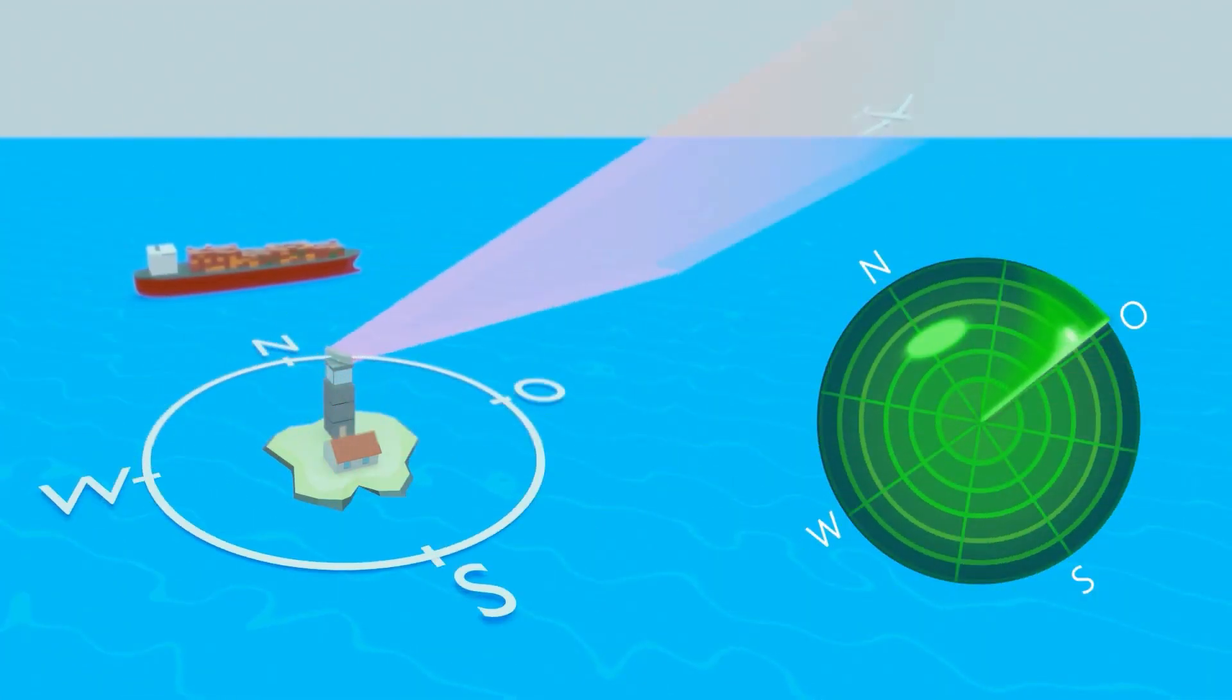Since the direction from which a transmitted signal is backscattered is known, the distance to the object can be determined by the time it takes for the signal to travel at the speed of light from the transmitter to the object and back.